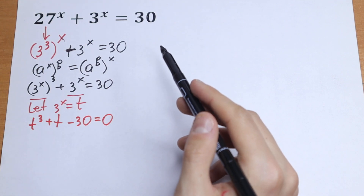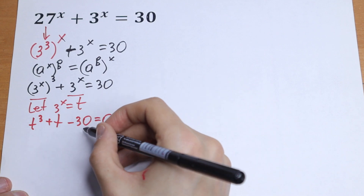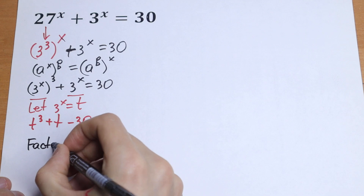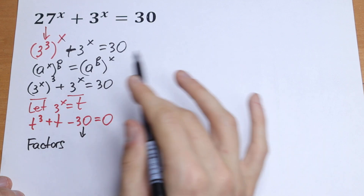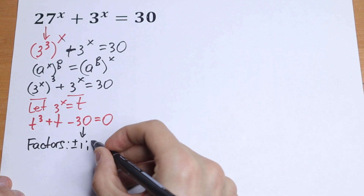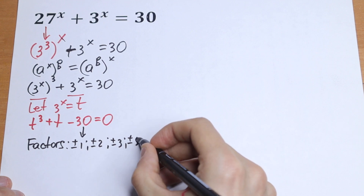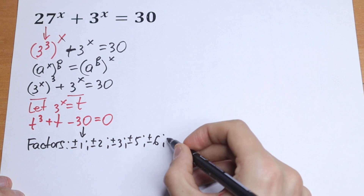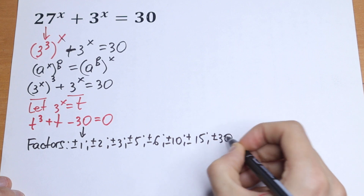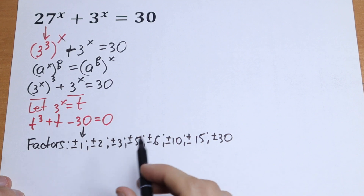So let's try to find our roots. How can we do this? Let's try to find the factors of 30, and then we can factor out t minus 1, t minus 2, t minus 3, t plus 2, something like that. The factors are: plus or minus 1, plus or minus 2, plus or minus 3, plus or minus 5, plus or minus 6, plus or minus 10, plus or minus 15, and plus or minus 30.